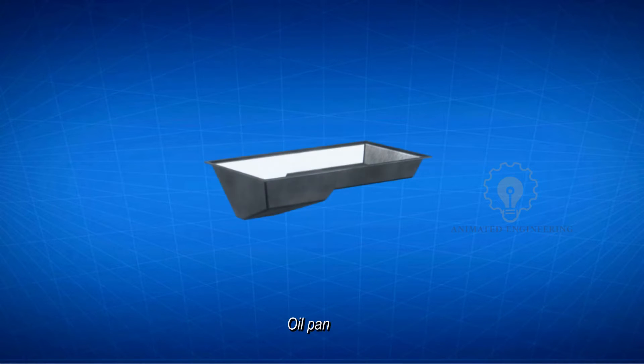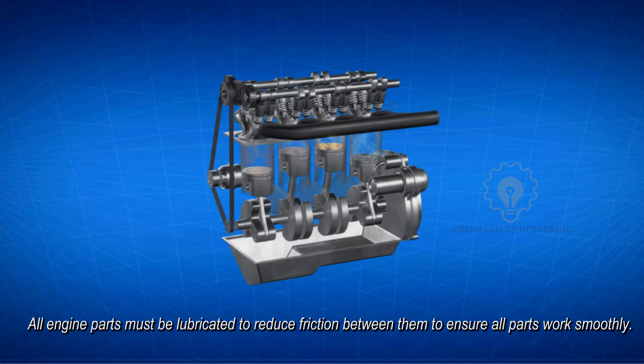The oil pan is mainly used for the collection of lubricating oil. All engine parts must be lubricated to reduce friction between them and to ensure all parts work smoothly.